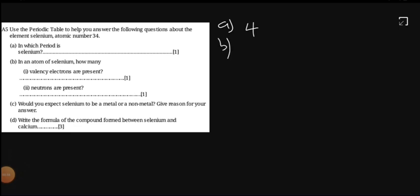Then part B, in an atom of selenium, how many valence electrons are present? Now we're talking about valence electrons. We're talking about the electrons in the outermost shell. So with selenium, you know that with atomic number 34...